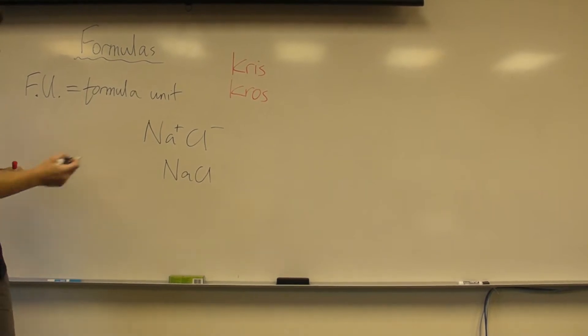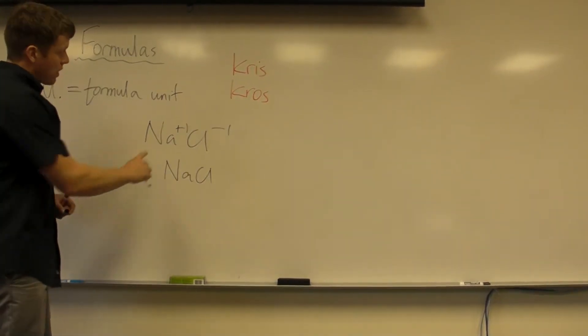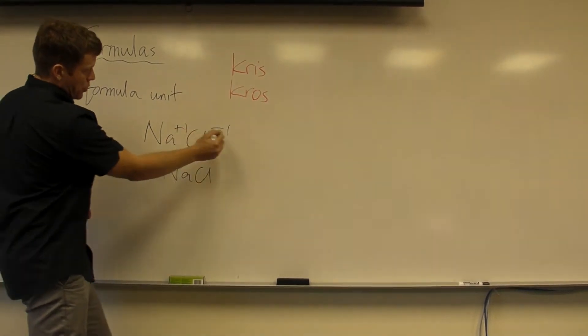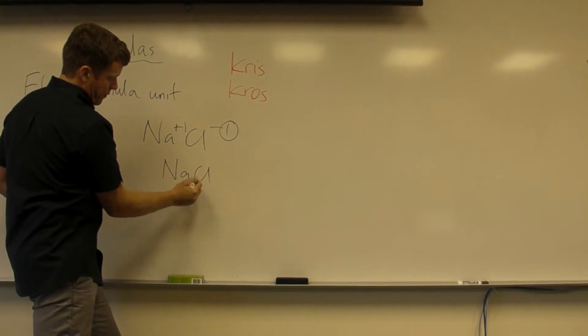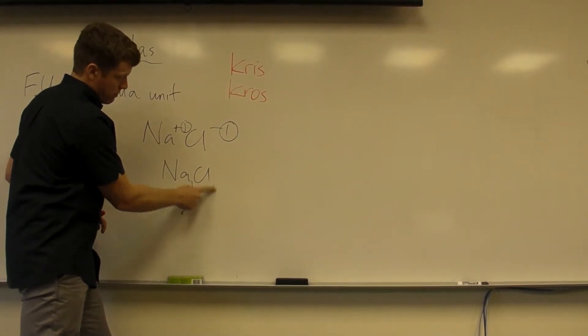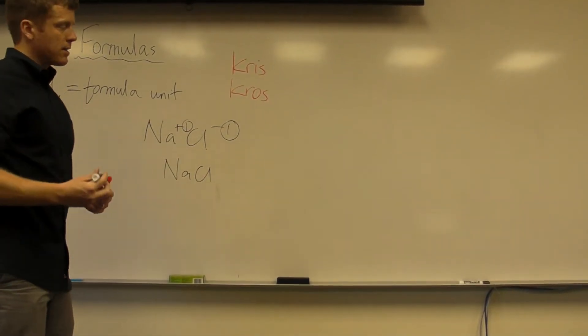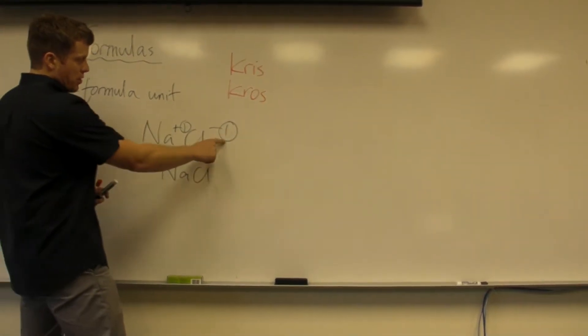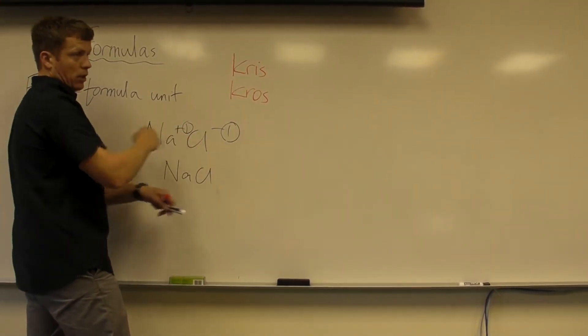So the idea of criss-cross is, imagine the invisible one here and here, plus one minus one. This one would come down here to go there. This one would come down here to go there. We don't write the ones, because it's like writing one x in algebra, you just write x. But imagine that this number comes here, this number comes here, it's criss-crossing, going to the opposite location.